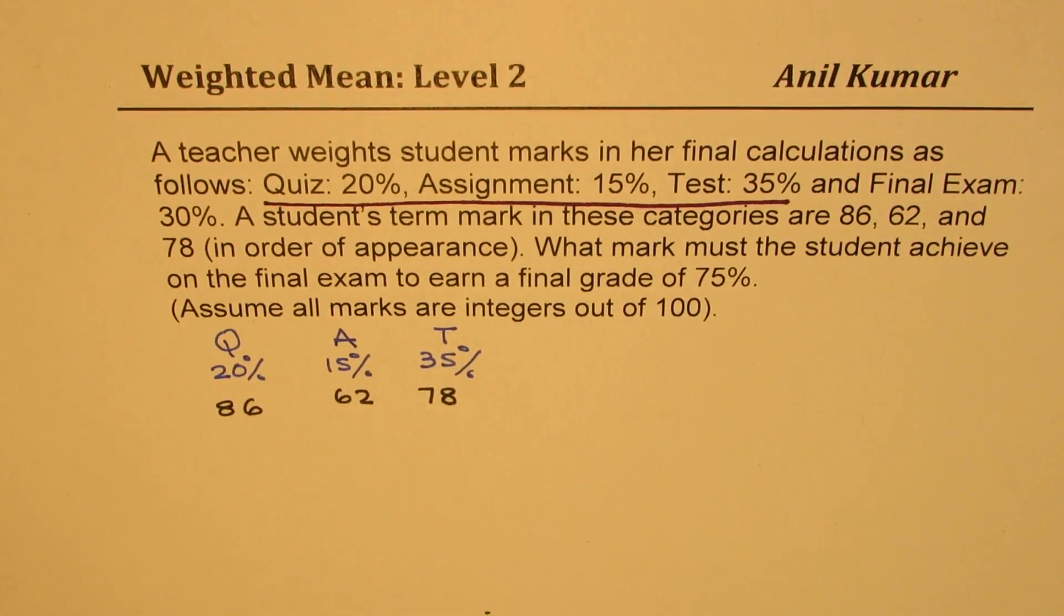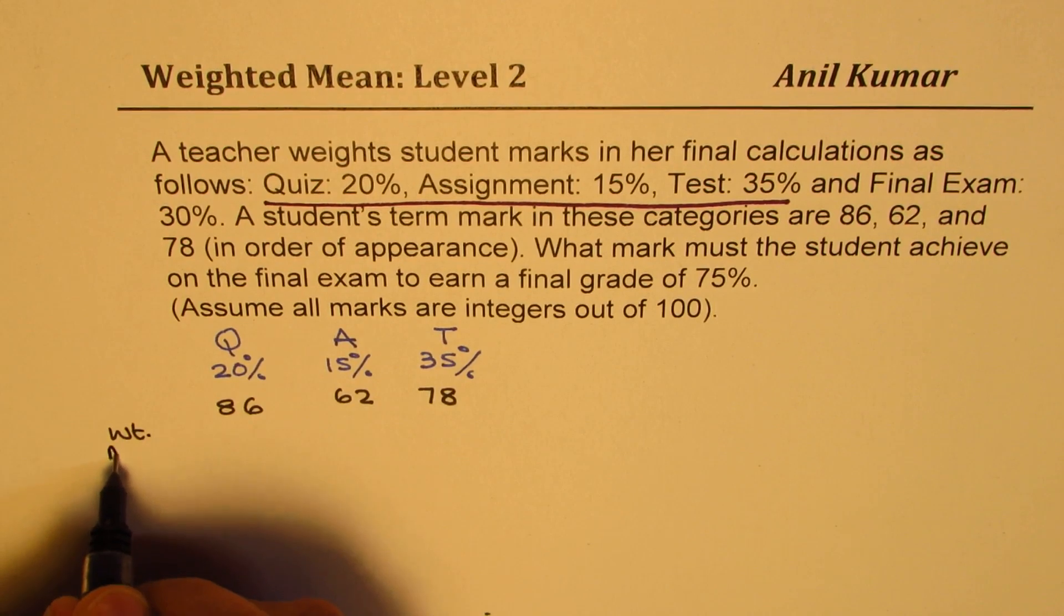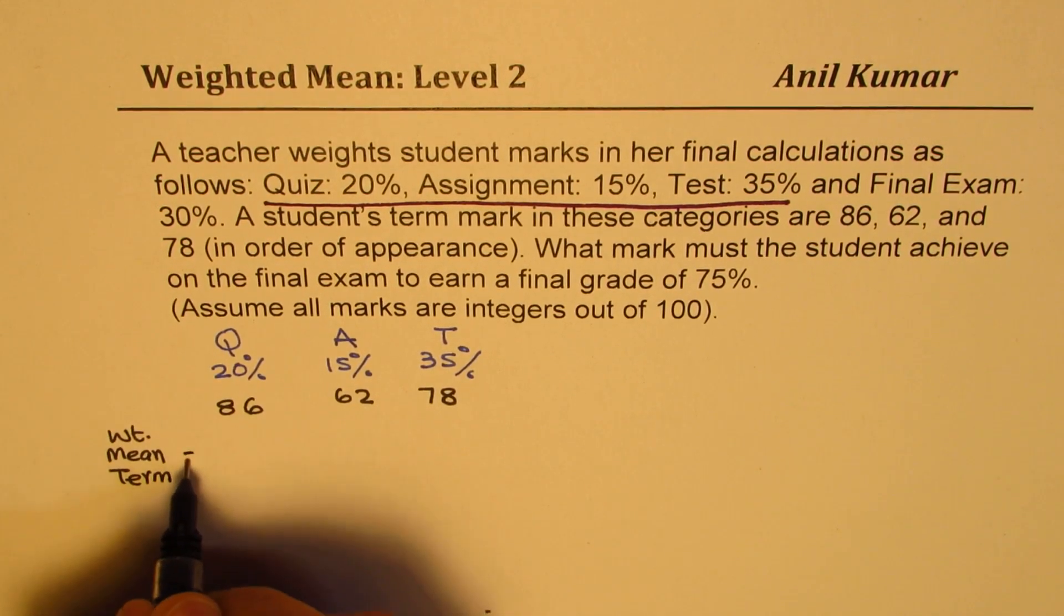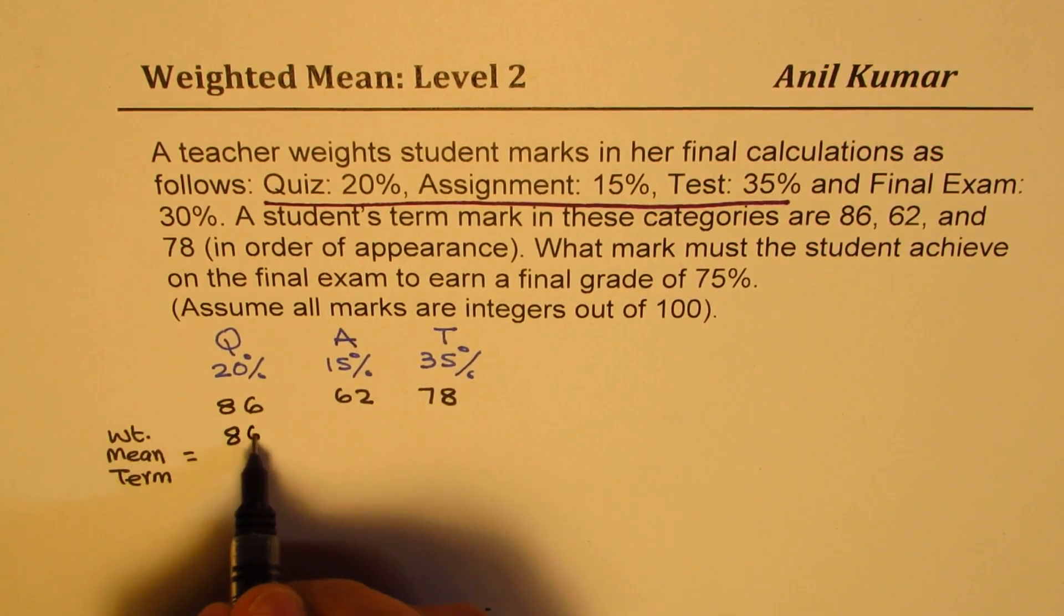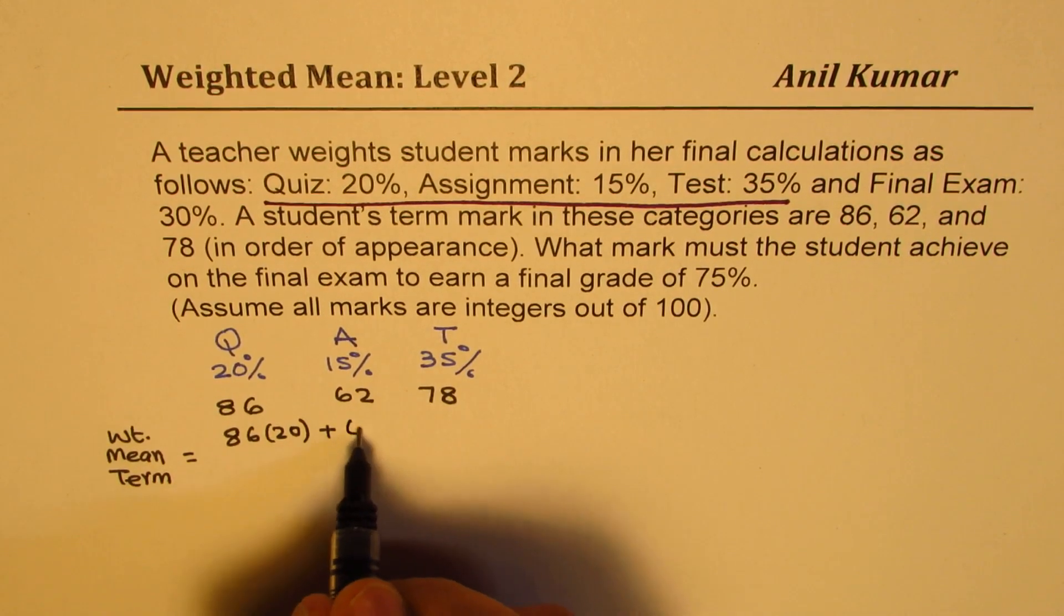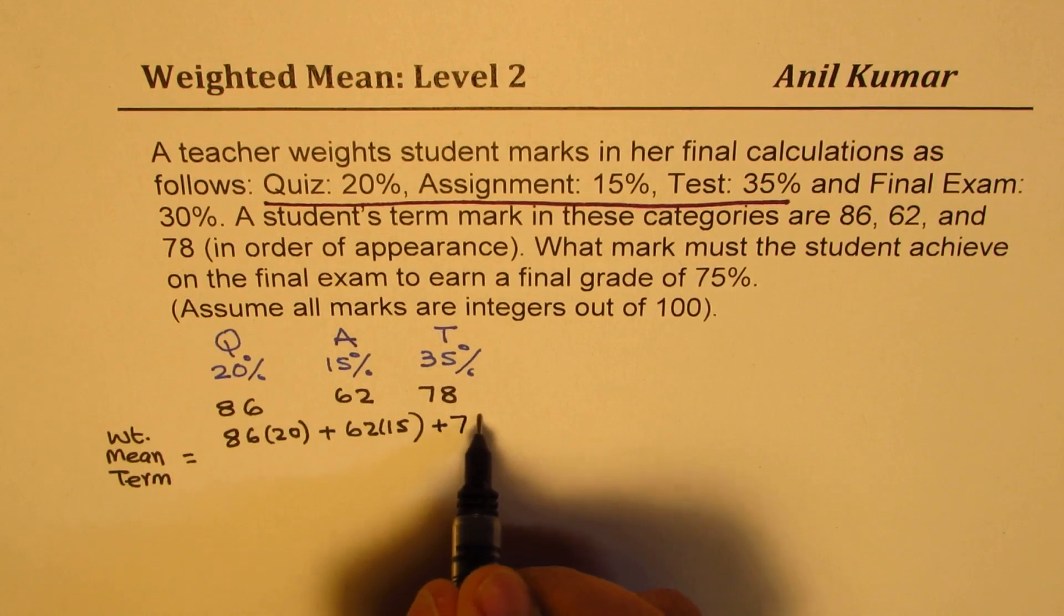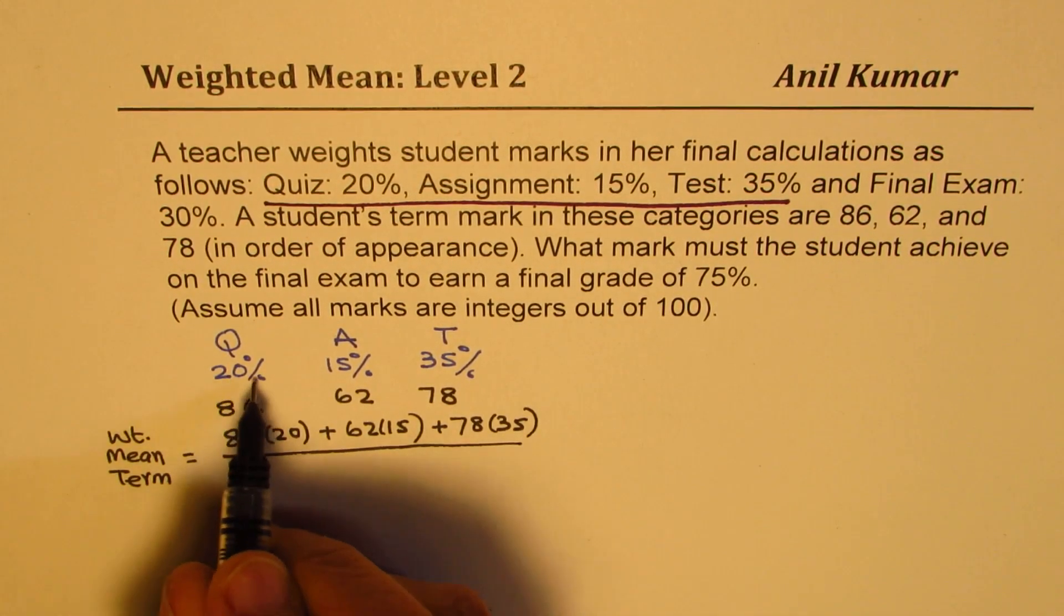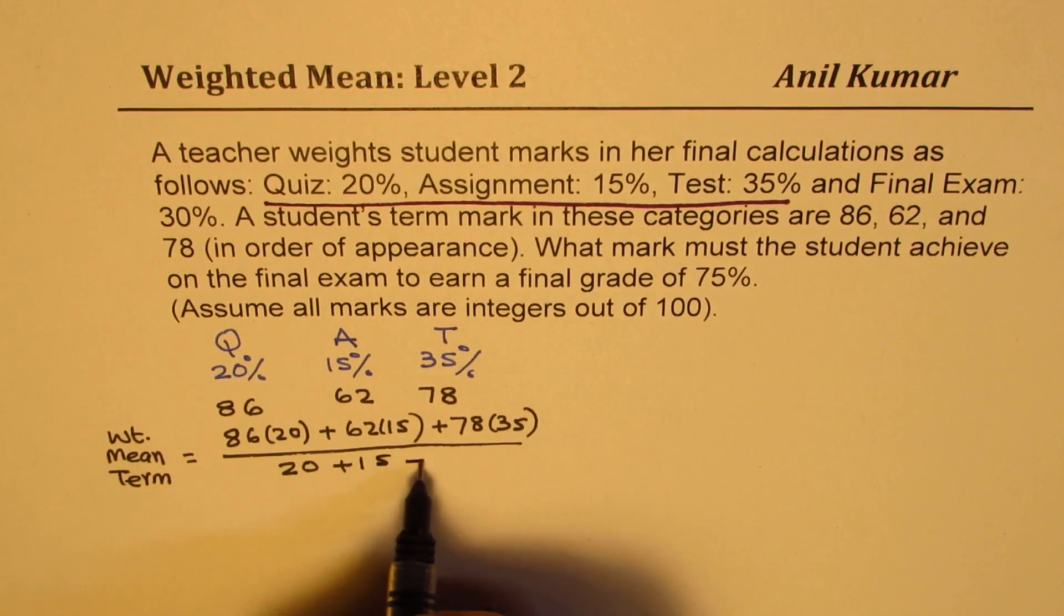So this is the term, right? So how do you find weighted mean for this kind of information? Let's say weighted mean for the term will be equal to: multiply these quantities. So we say 86 times 20 plus 62 times 15 plus 78 times 35, and you have to divide by the total weight, that is to say 20 plus 15 plus 35.